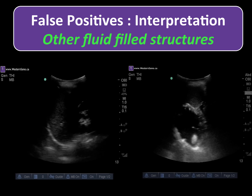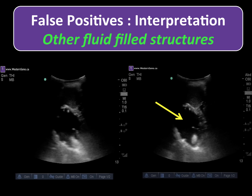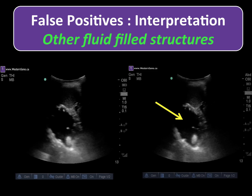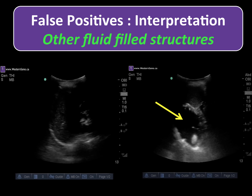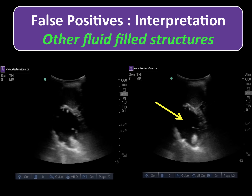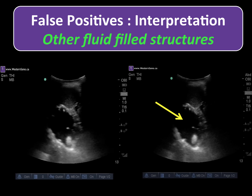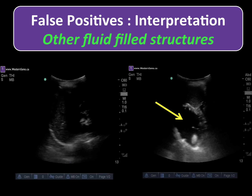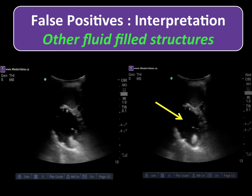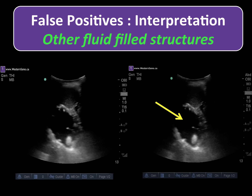One may at times mistake a stomach full of food or fluid for free fluid or abnormal splenic architecture in the left upper quadrant. To avoid this pitfall, ensure that the image plane is not too far anterior or medial so that the stomach does not obscure the left-sided structures. Stomach is often found in the far field in relation to the spleen and anterior and medial to the kidney. Fluids seen in the stomach will be encased by the walls and rugae are often visible. In addition, fluid in the stomach will not track into the crevices surrounding the spleen.